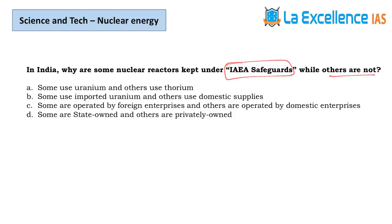The next question is about IAEA safeguards — some nuclear reactors are kept under IAEA safeguards, some are not. Not because some use thorium vs. uranium. Not because some are state-owned vs. privately owned. It's because some use imported uranium and others use domestic supplies. When foreign enterprises are involved or imported uranium is used, IAEA safeguards apply. Recently many nuclear reactors have been placed under IAEA safeguards because of imported uranium use.